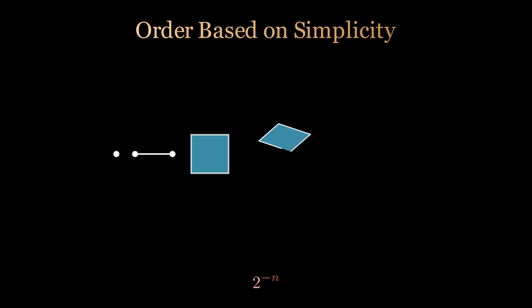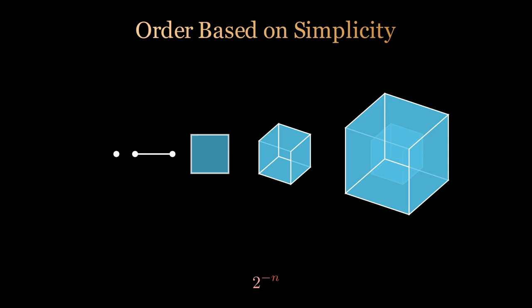Tegmark attempts to solve this problem by saying that if the level 4 multiverse exists, and reality is inherently mathematical, then it should be possible to order mathematical structures based on simplicity, such as 2 to the negative n, where n is the number of bits required to describe or store all the information of a structure. He argues this is the most reasonable order, seeing as the laws of nature tend to simplicity. This finally means that we should expect to find ourselves in the simplest mathematical structures. This argument is basically a mathematical version of Occam's razor.